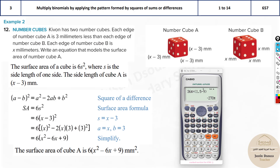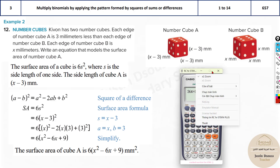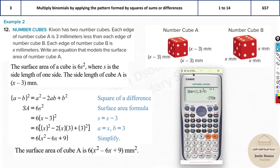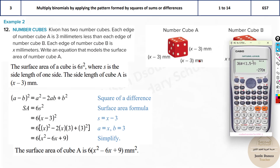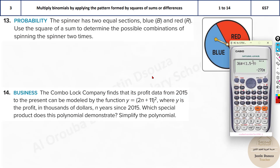Again, you can use the calculator: assume x = 1.5, find 6(1.5 - 3)² and match it with the four answer options. Since cube B is x and cube A is 3 less, the edge is (x - 3), and we find only the surface area of cube A.